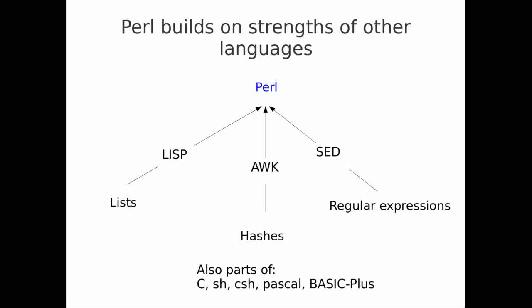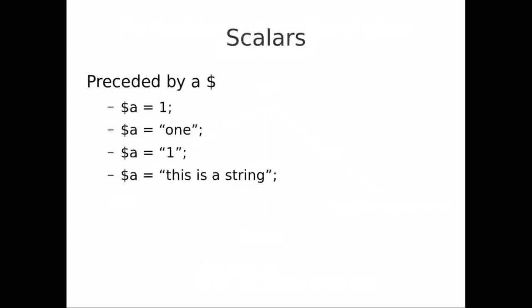Let's take a look at each of these three different data types — the scalars, the arrays, and the hashes — and see how they're defined. Scalars are preceded by a dollar sign. The dollar is supposed to remind you of the S of scalar, so that you know dollar means scalar.